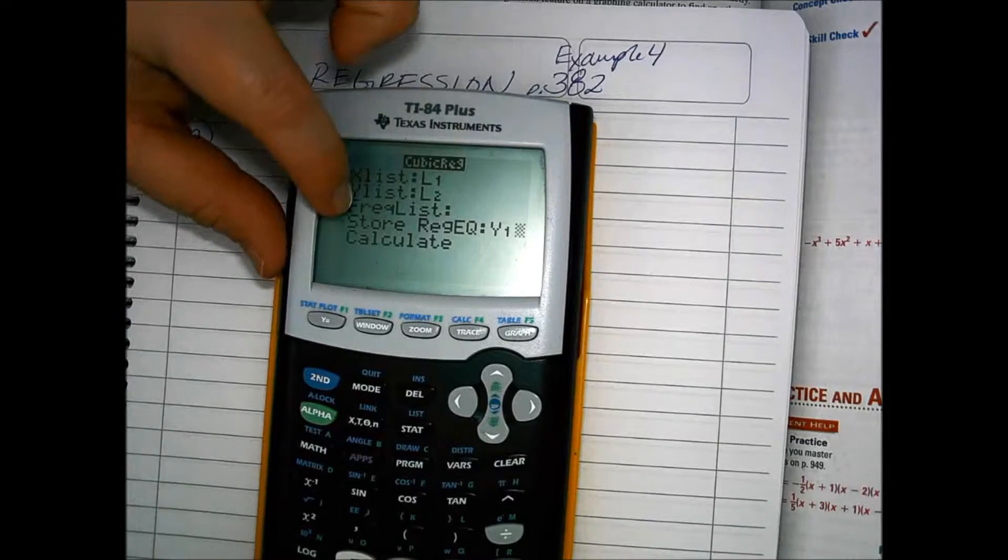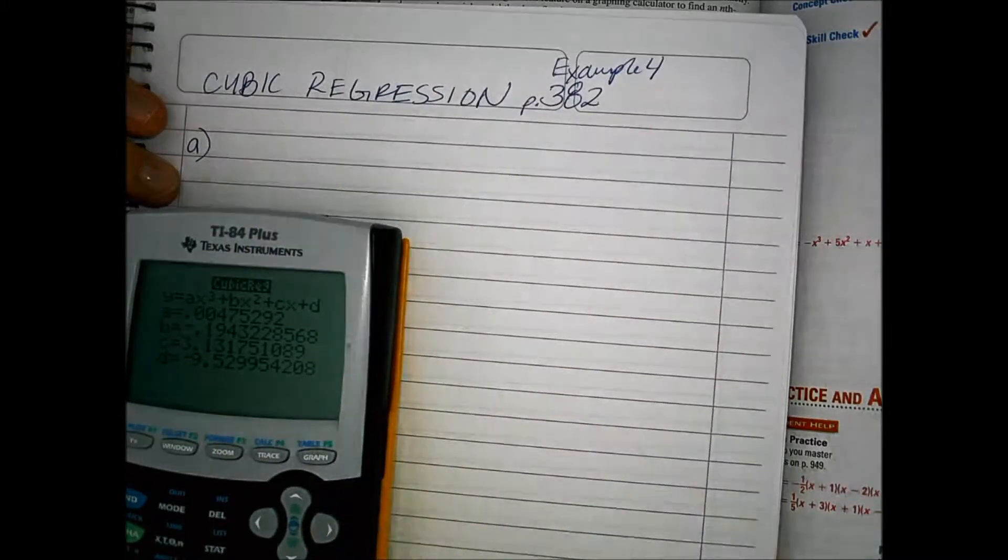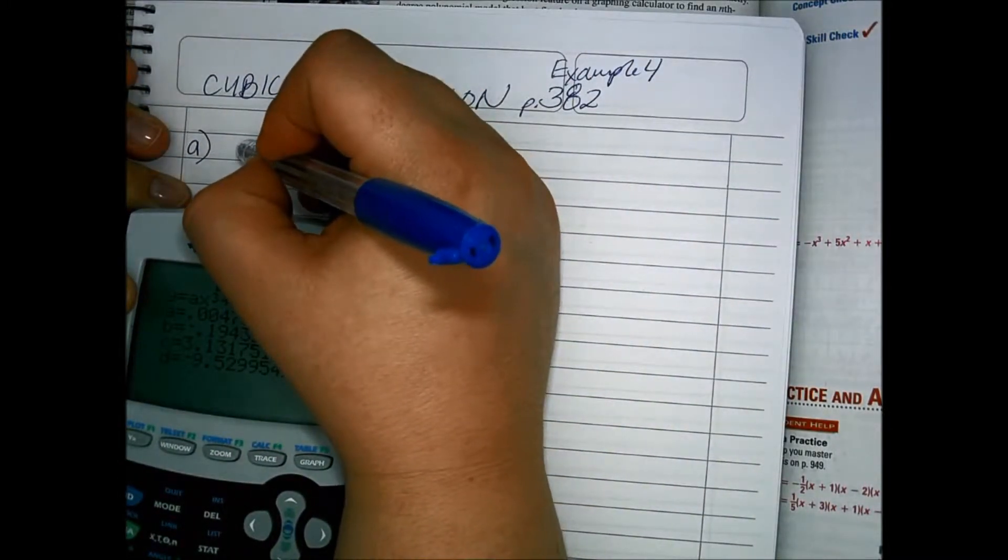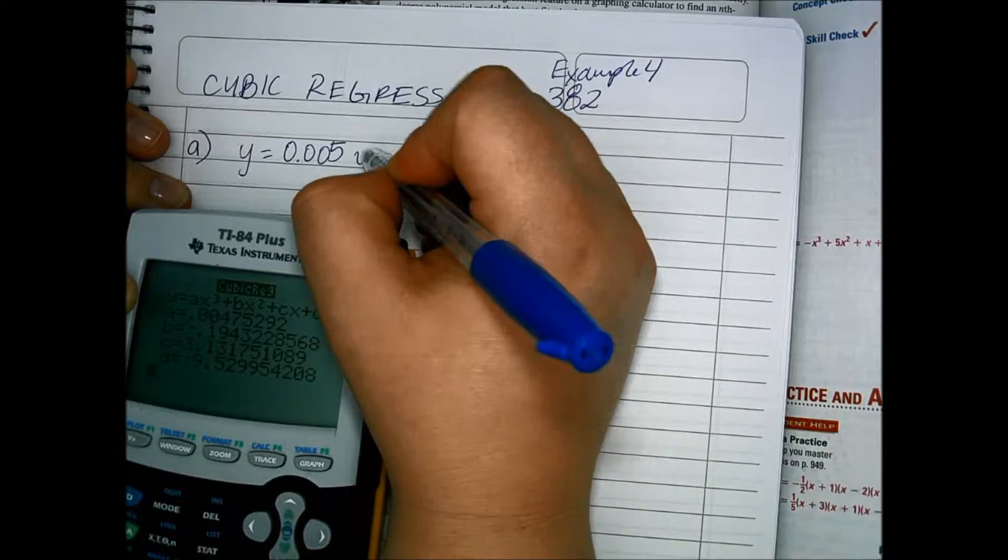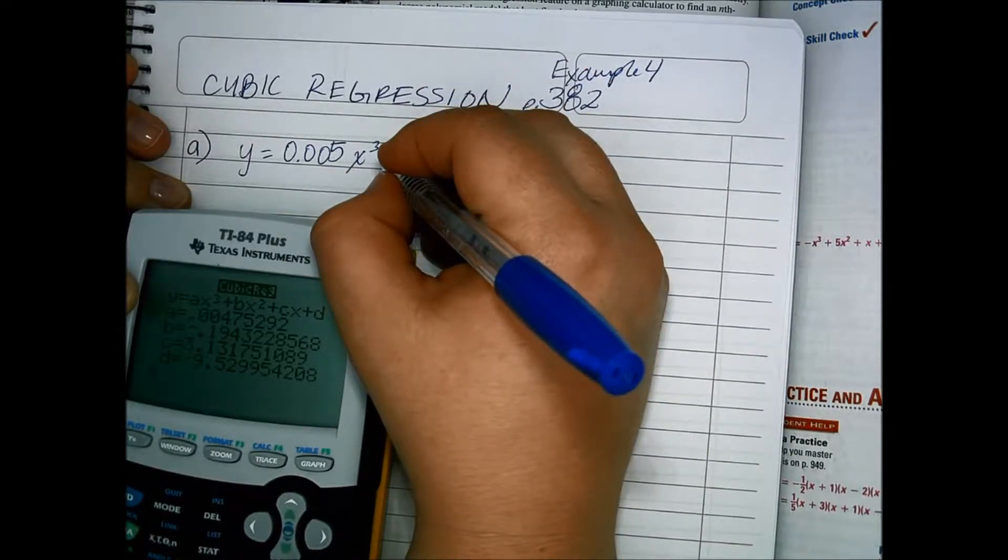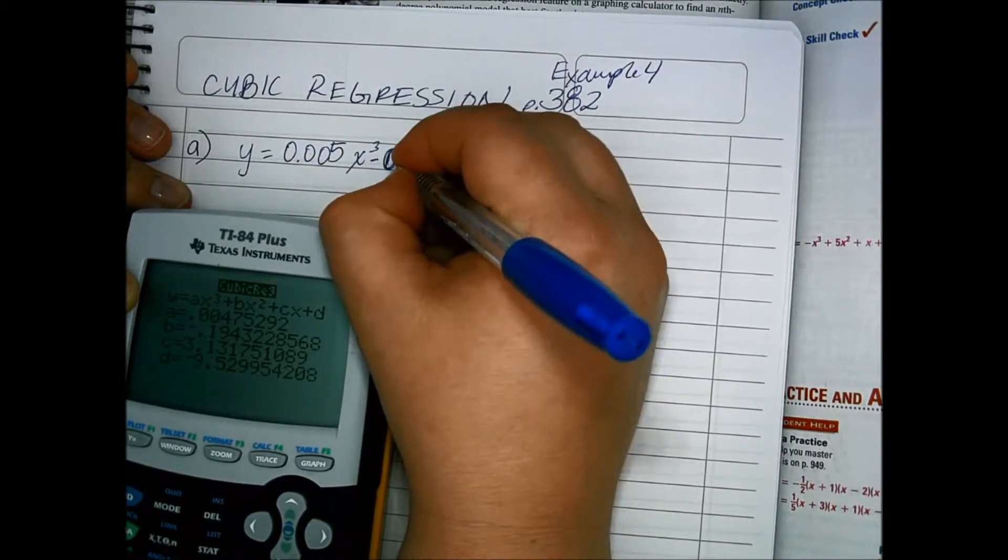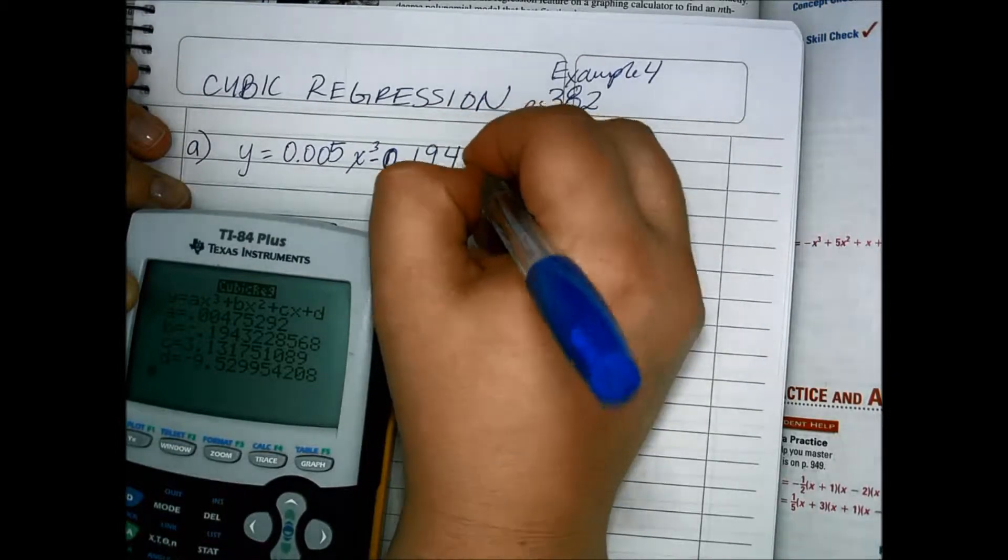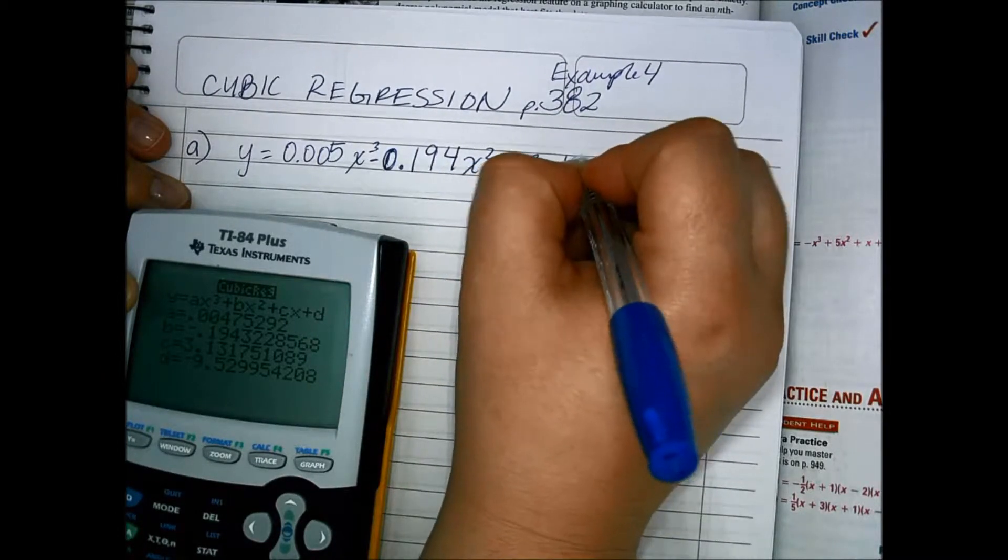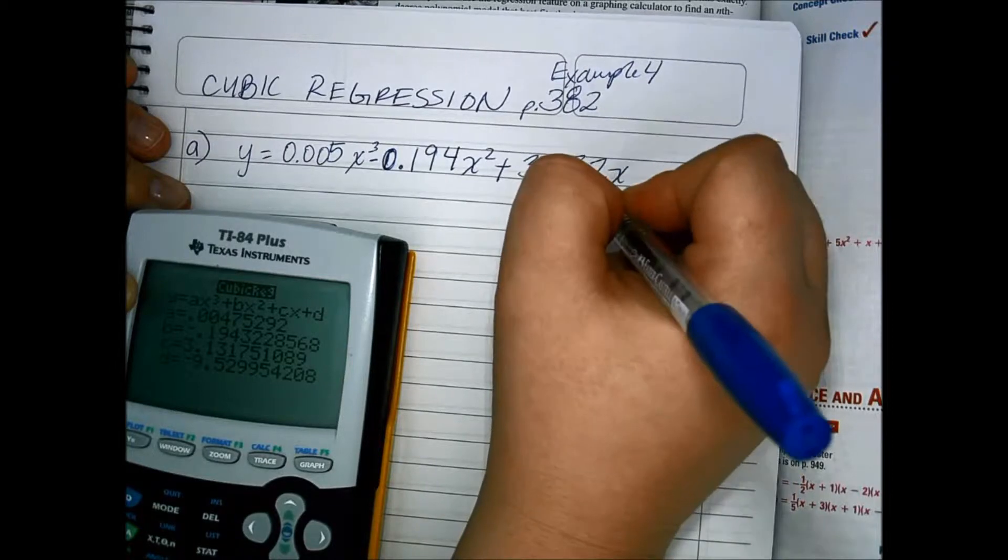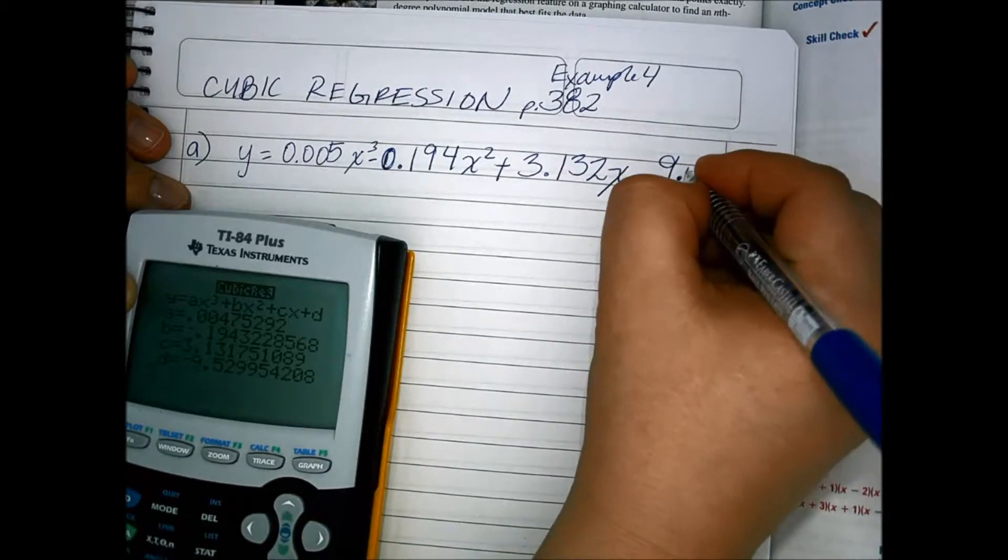And you'll see that y1 will come up in the store reg eq. Go down to calculate. Then we get our cubic regression. A is the cubed value, so y equals 0.005x cubed, I'm rounding to the nearest thousandths place, minus 0.194x squared plus 3.132x minus 9.53.